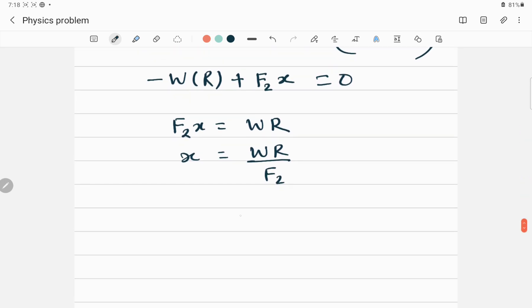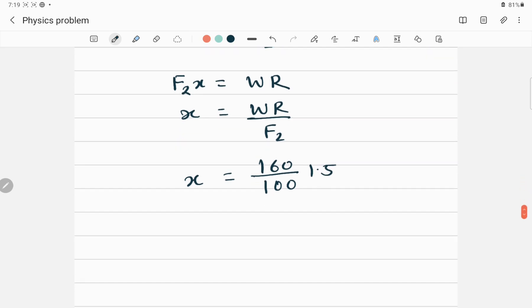Now, we have value of W, which is 160 divided by F2, we have here. And R is 1.5. If I calculate all these values, put in calculator, this is cancelled. So x is equal to 1.6 multiplied by 1.5.